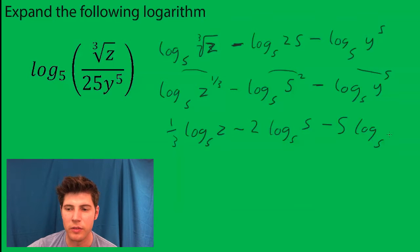Log 5 of y. And the last step is, log 5 of 5 is just 1. So for the final answer we get one-third log 5 of z minus 2.